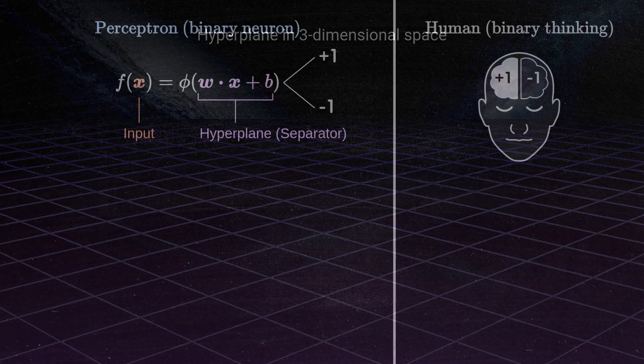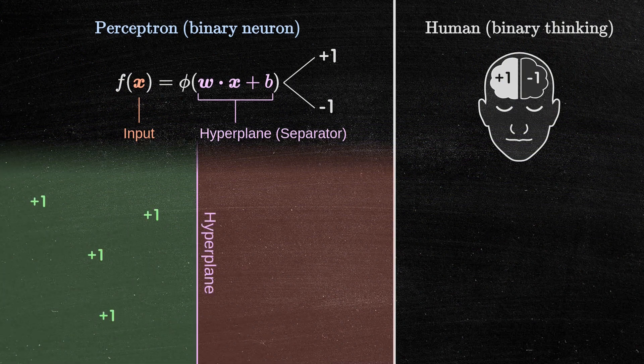A hyperplane can exist in any dimension. If we want to draw an analogy with the human mind, we can view this hyperplane as a prejudice.